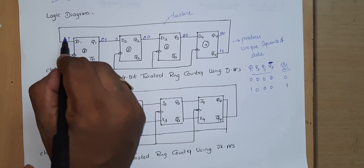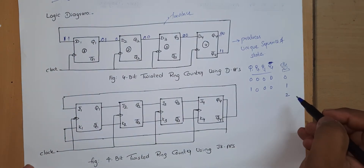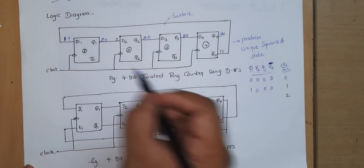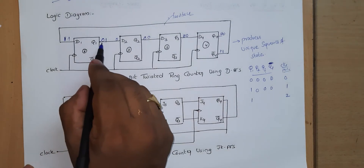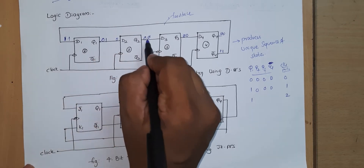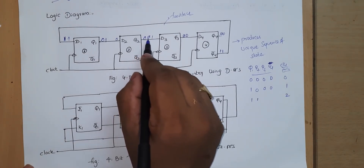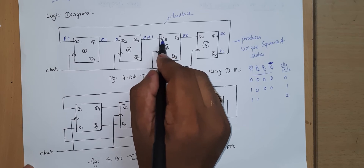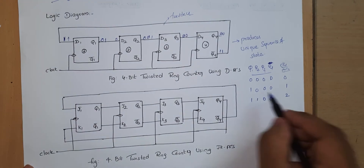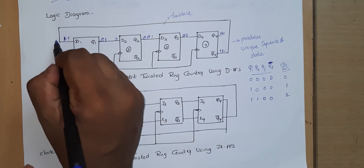Since Q4 is 0, Q4-bar is 1, and this 1 is connected back to D1. After applying the second clock pulse, D1 is 1 so Q1 stays 1. The previous Q1 value of 1 reaches D2 so Q2 becomes 1. The previous Q2 value of 0 propagates to D3 so Q3 stays 0. Q4 remains 0, and Q4-bar is again 1. State is Q1=1, Q2=1, Q3=0, Q4=0.